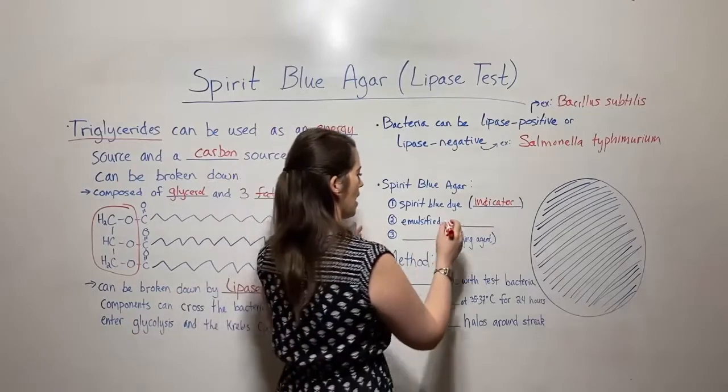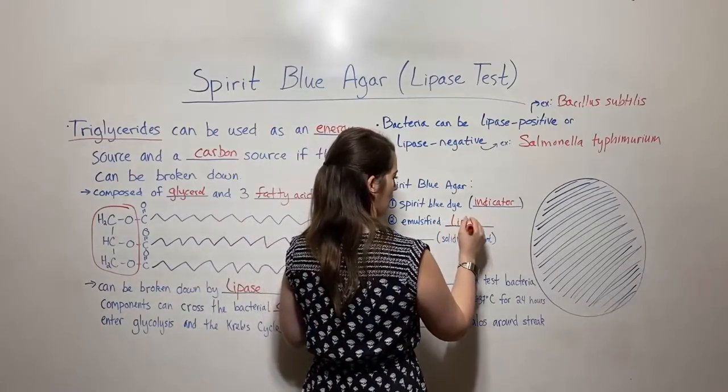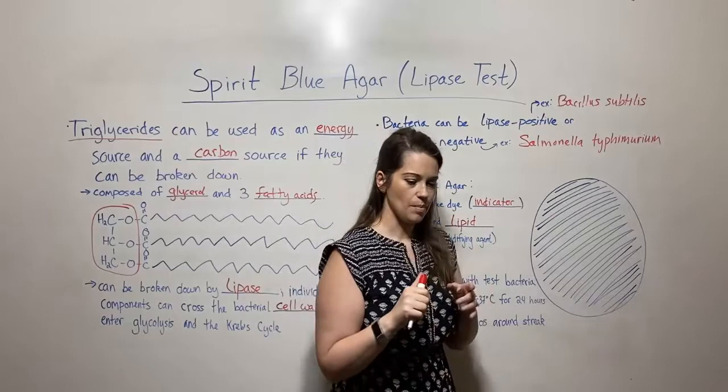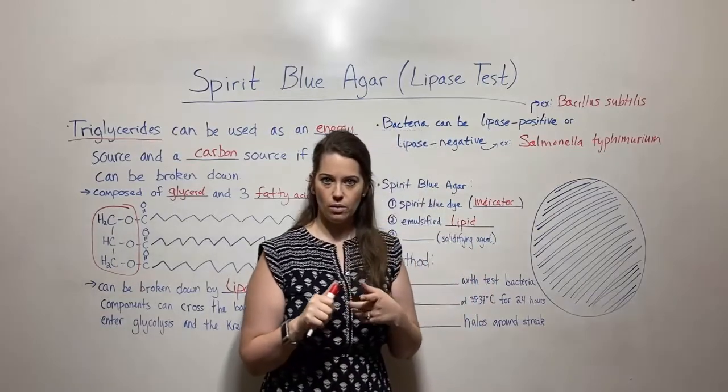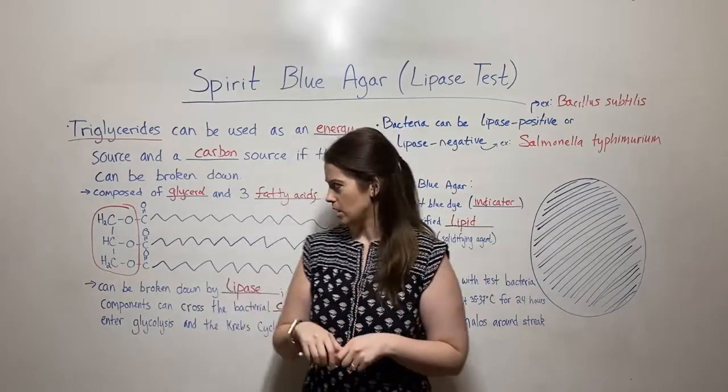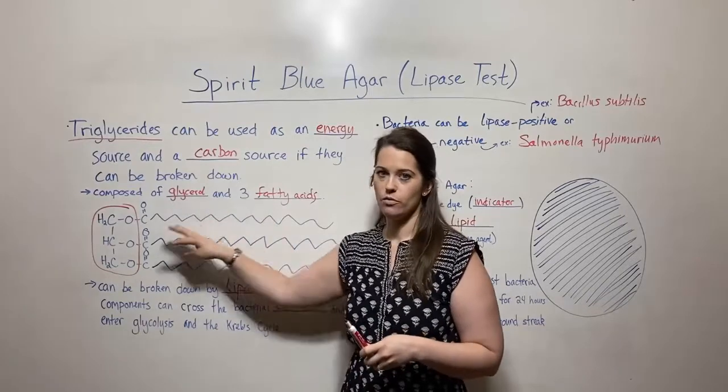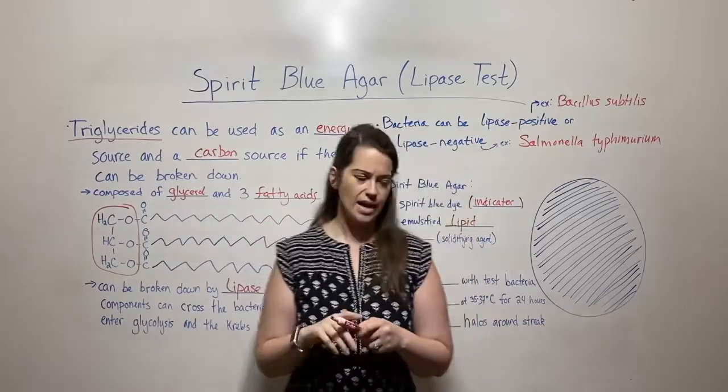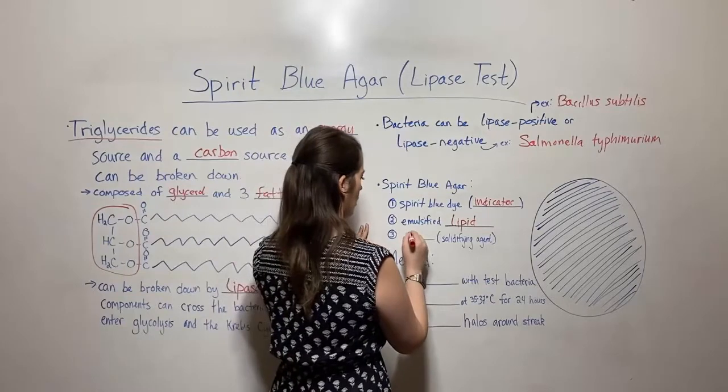There's also some kind of emulsified lipid. This is something like corn oil or olive oil, just some source that's very rich in triglycerides. And then there's going to be agar.